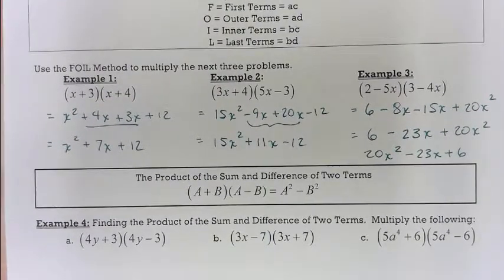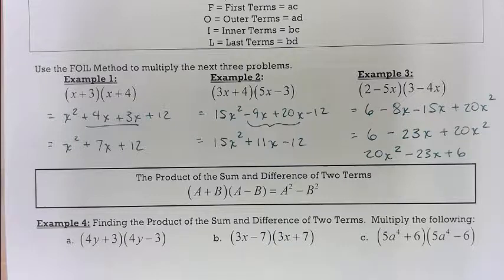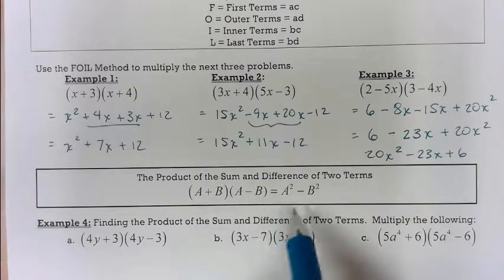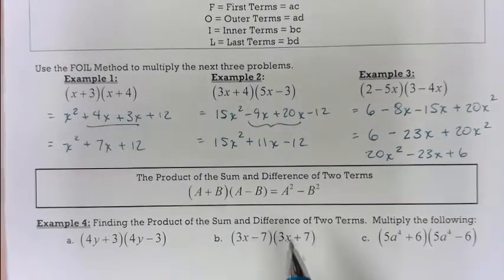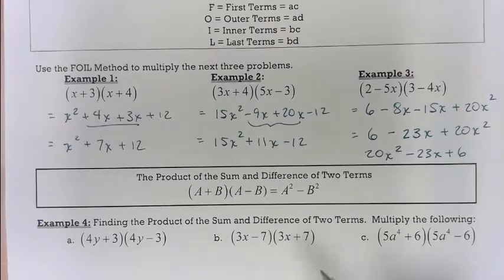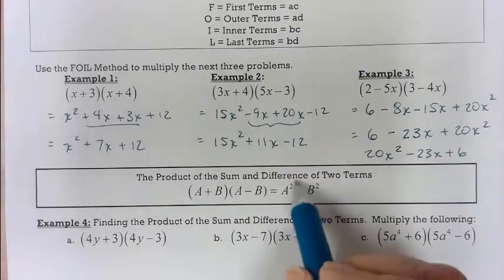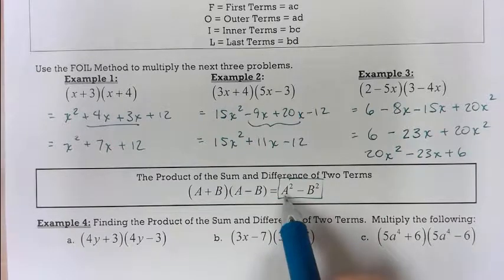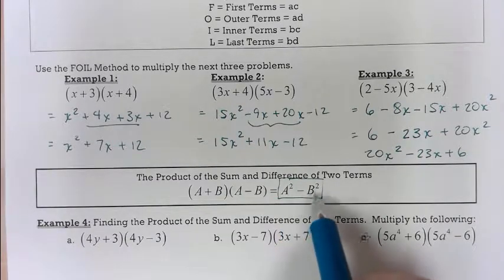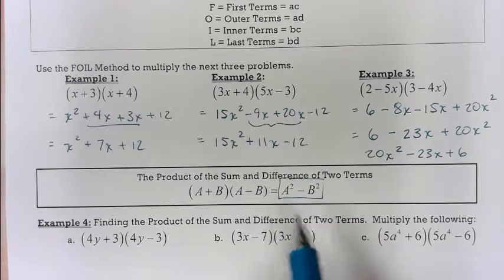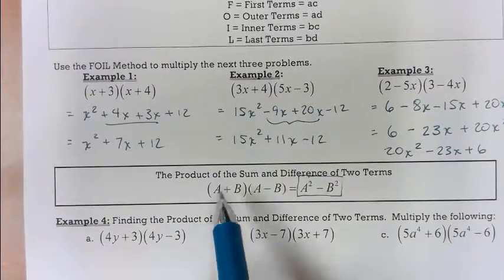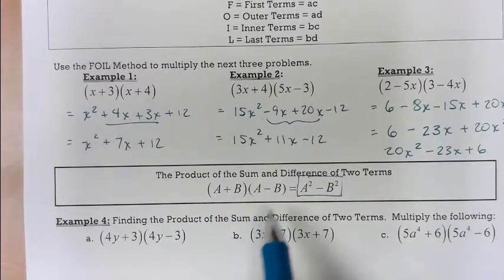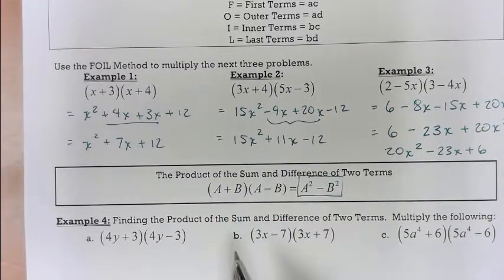The sum, the product of the sum and difference of two terms. This will come in handy when we start factoring, which is in the next chapter. But look at the answer here. The first item is squared minus the second item squared. The only way that can occur is if the first value in both parentheses are the same, second value is the same, but the signs are the exact opposite.